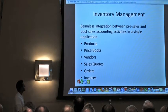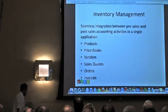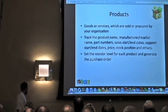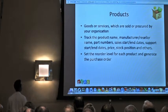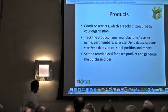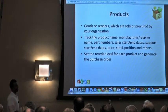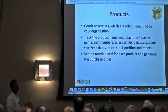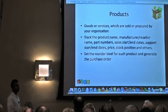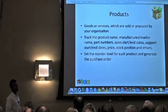We're going to go into the inventory modules: products, price books, vendors, sales quotes, orders, and invoices. This takes it past just the CRM. You can add your products here — goods or services sold by your organization — track the sales start and end time, support start and end time, and the actual quantity of the item. When you invoice the item, if you have 100 in stock it will go down to 99 or however many you sold. You can set a reorder level to automatically send a purchase order using a template to your vendor.